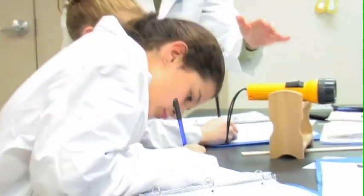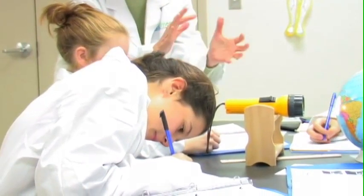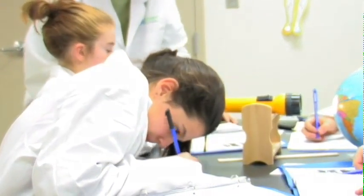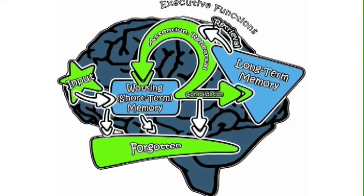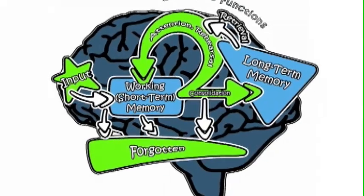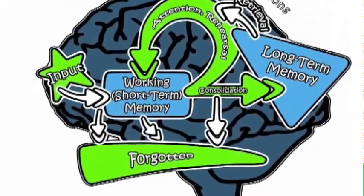Virtually any time a student refers back to newly introduced information and uses it in any way, rehearsal takes place, and it will help them to consolidate the new information into long-term memory. By far, most information in short-term memory never makes it to long-term memory. It is not consolidated. It is lost and forgotten.